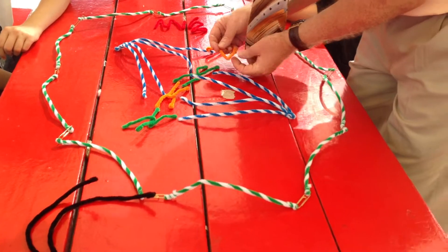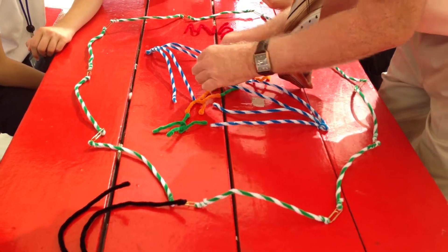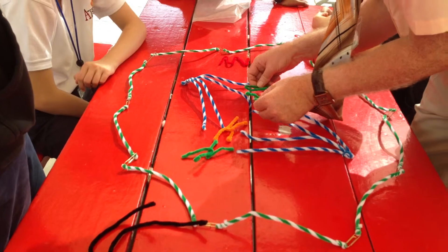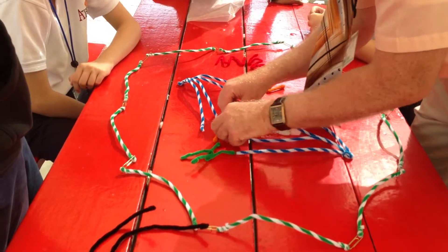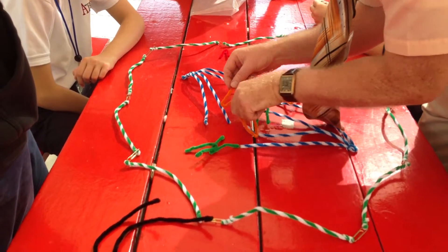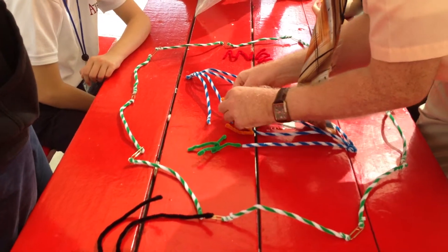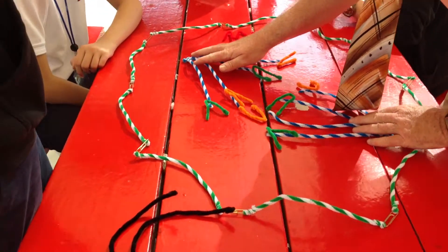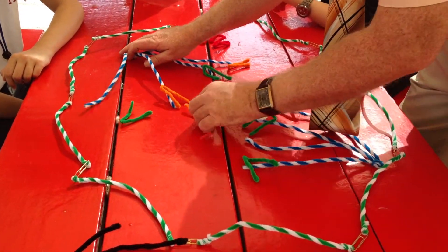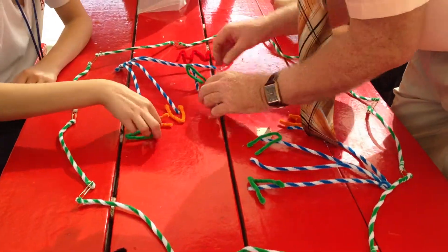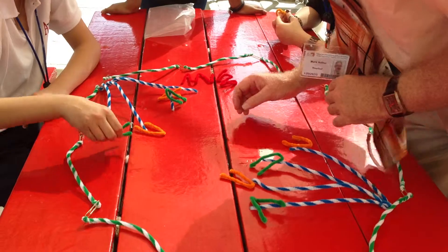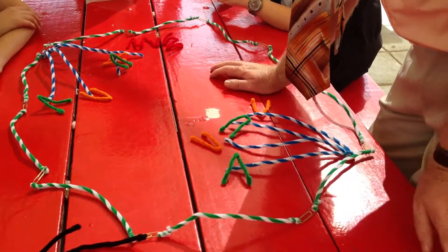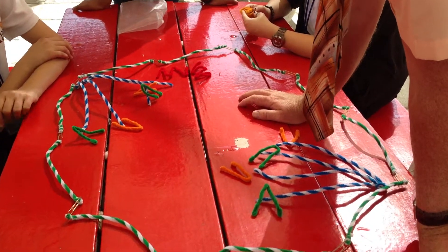Anaphase is when these begin to be pulled apart. The two sister chromatids are pulled apart into separate identical chromosomes. These begin to pull to the opposite side—that's anaphase, A for apart. Once they get way over here, we're done with anaphase.